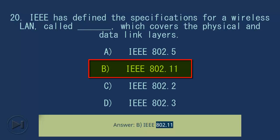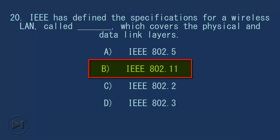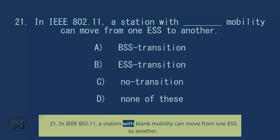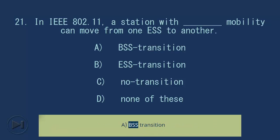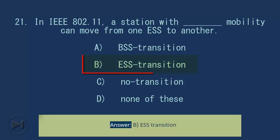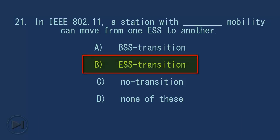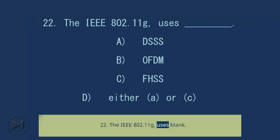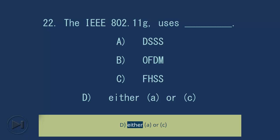Question 21: In IEEE 802.11, a station with blank mobility can move from one BSS to another. A. BSS Transition, B. ESS Transition, C. No Transition, D. None of these. Answer: B. ESS Transition. Question 22: The IEEE 802.11g uses blank. A. DSSS, B. OFDM, C. FHSS, D. Either A or C. Answer: B. OFDM.